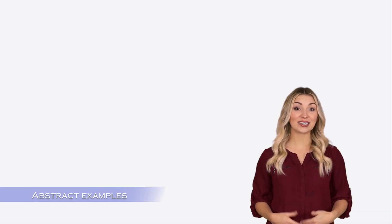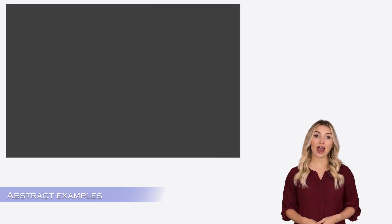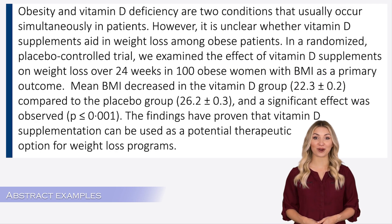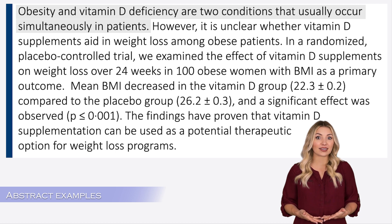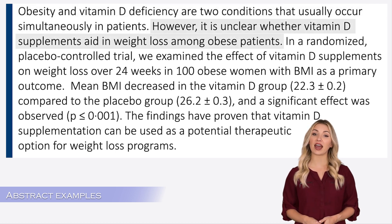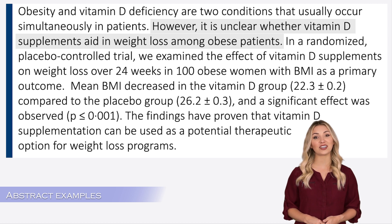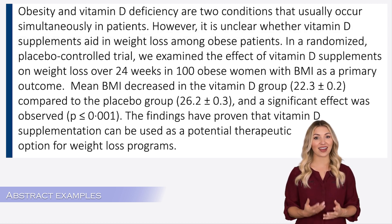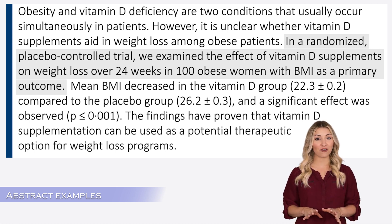Let's look at an example abstract written in both structured and unstructured formats. This is an abstract from a medical research paper. The authors are starting with the topic and the problem definition — that vitamin D and obesity appear to be linked, and it is unclear if vitamin D supplements will contribute to weight loss among obese patients. Then they are explaining the method: they conducted a randomized clinical trial with 100 participants. The trial went on for 24 weeks and they measured BMI during the study.